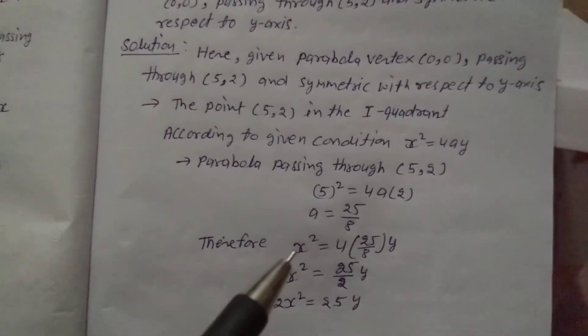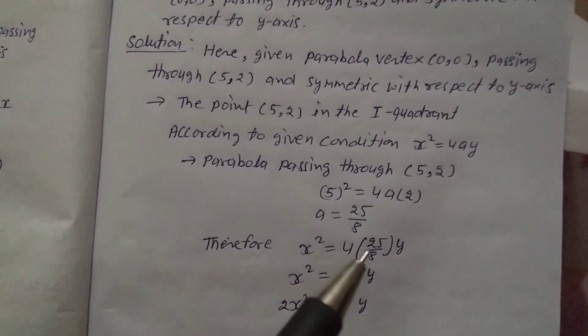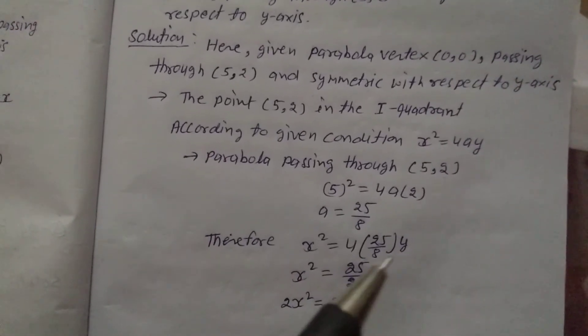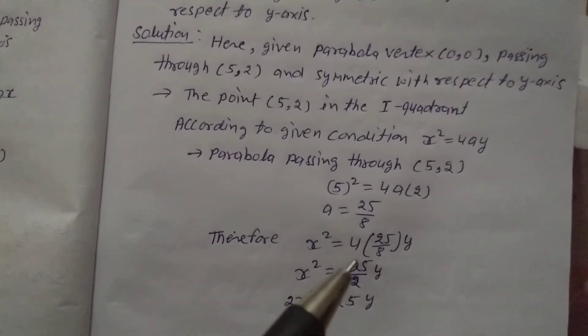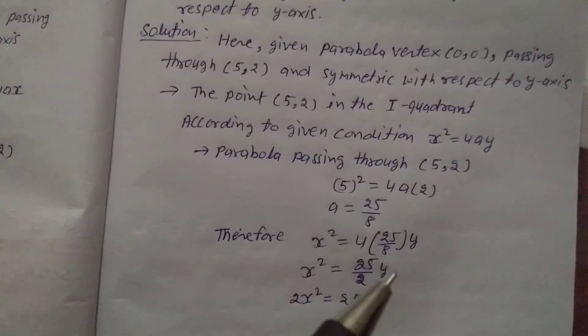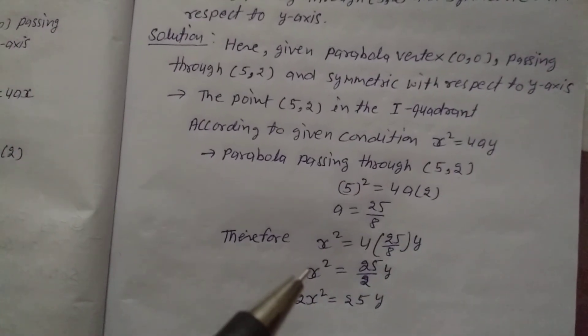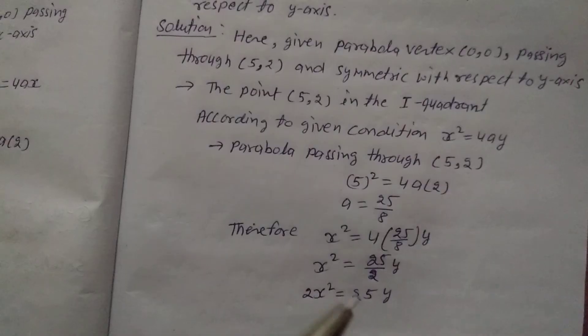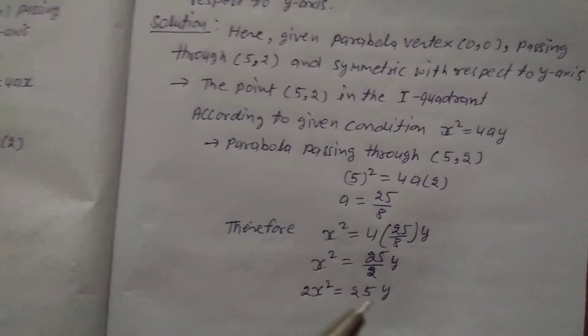Therefore, x square equals 4 bracket 25 by 8 into y. x square equals 25 by 2 y. Multiply both sides by 2, so 2x square equals 25 y. That is the answer.